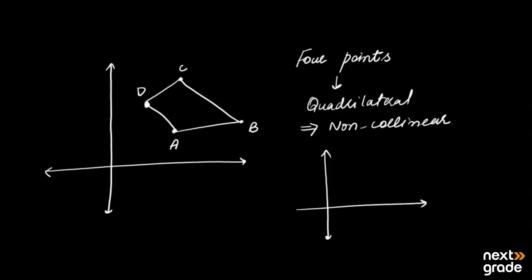So let's draw a Cartesian plane and consider four points — one, two, three, and four — marked A, B, C, and D. If you join A to B, B to C, C to D, and D to A, but you can see that A, B, and C are lying on a straight line — meaning A, B, C are collinear — then that shape becomes a triangle, not a quadrilateral. So the condition for quadrilateral is that all four points you place in the Cartesian plane must be non-collinear.